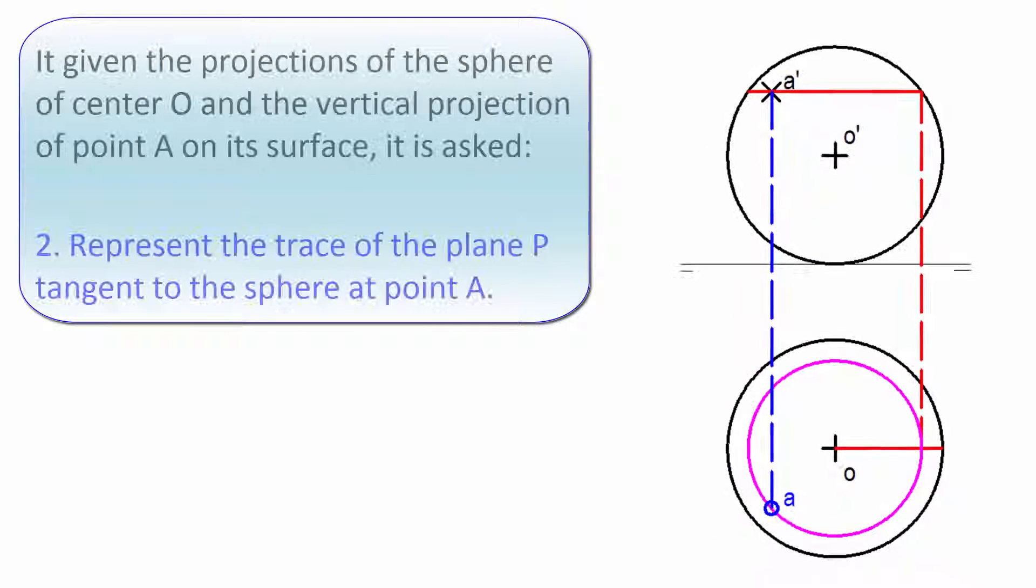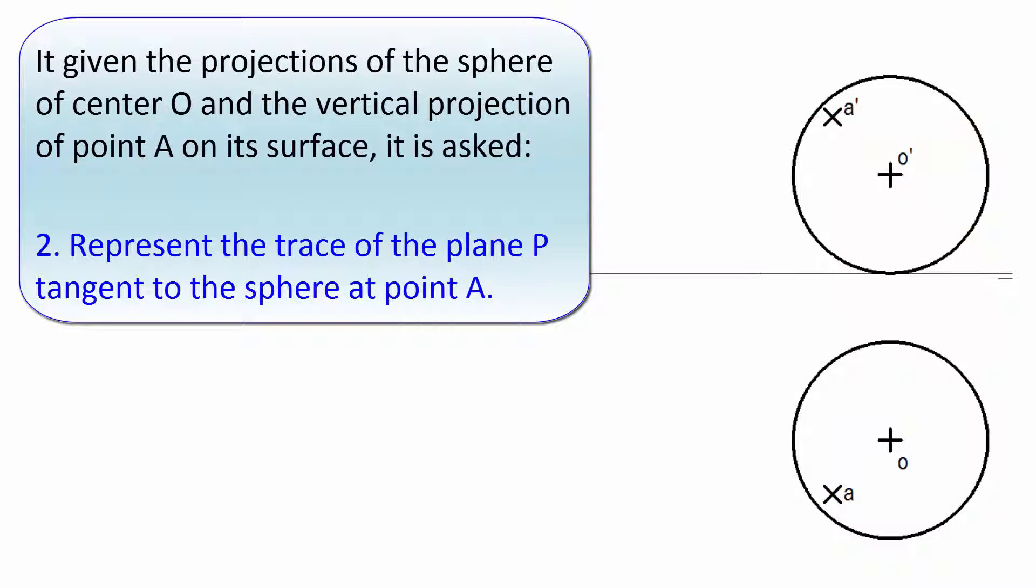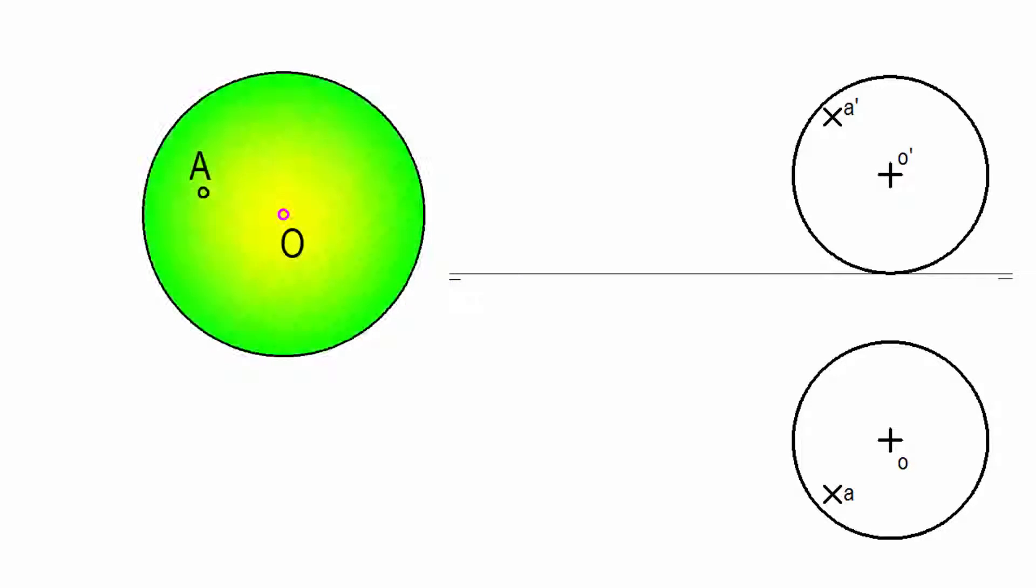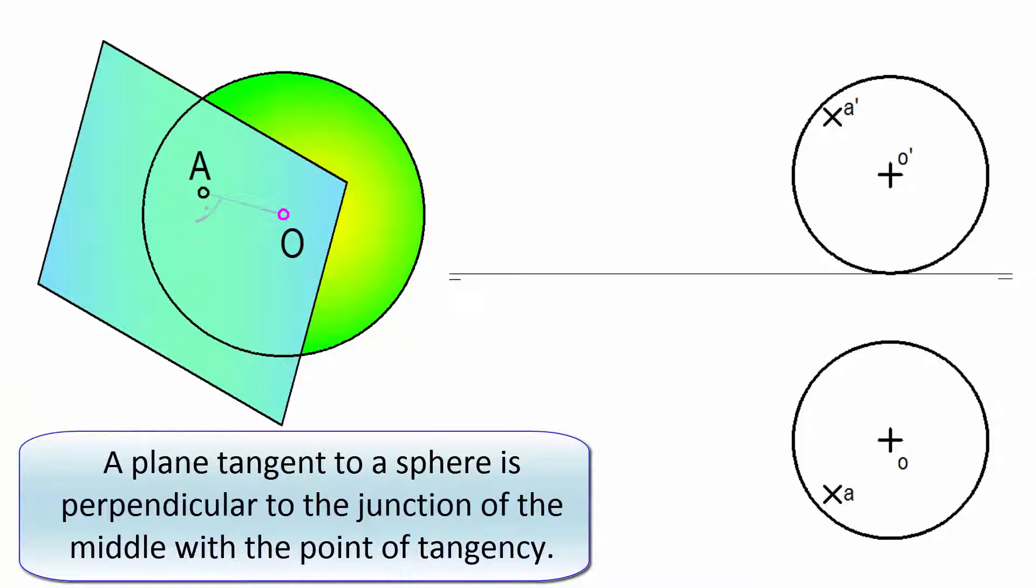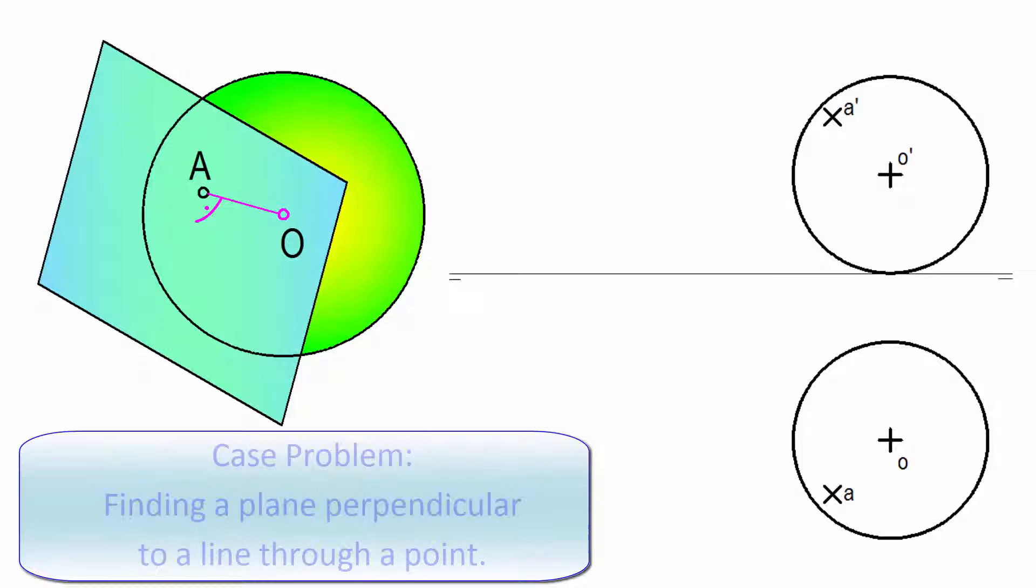In the second section we find the plane that is tangent to the sphere as being the point of tangency point. It is easily solved if we remember that a plane tangent to a sphere is perpendicular to the segment joining the tangent point and the center of the sphere. Then the problem reduces to a known case, find a plane perpendicular to a line through a point.